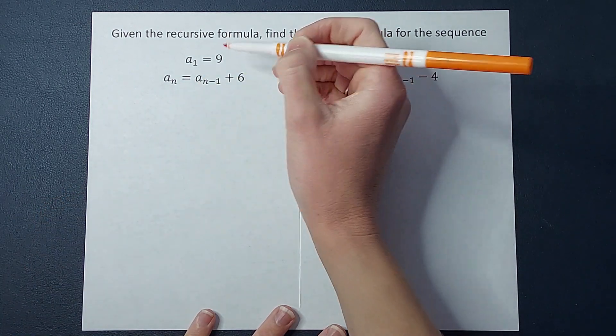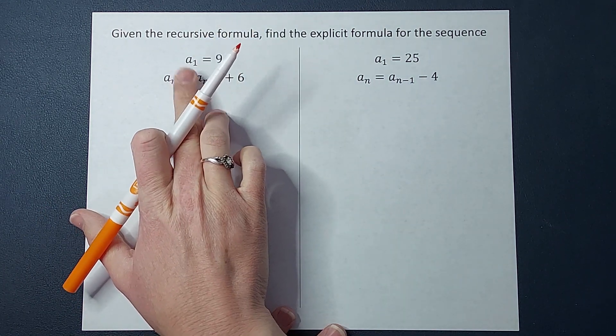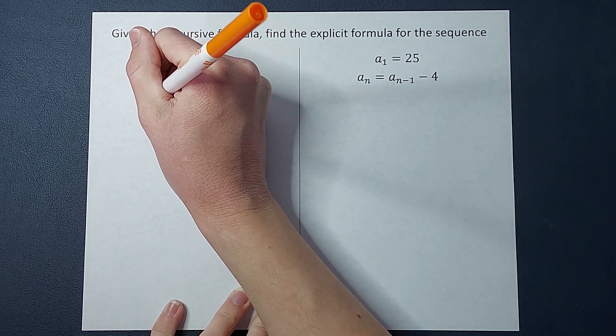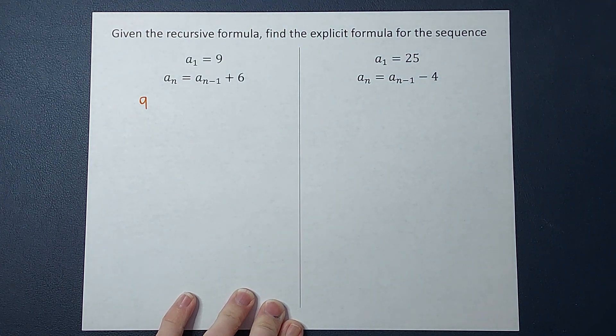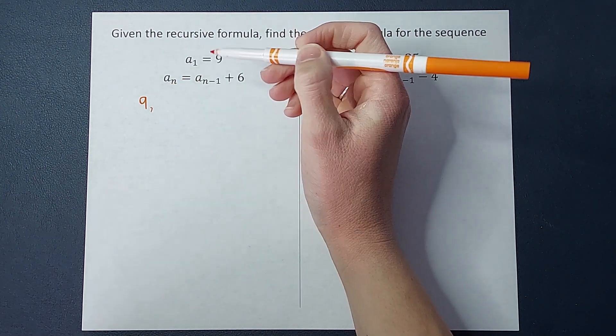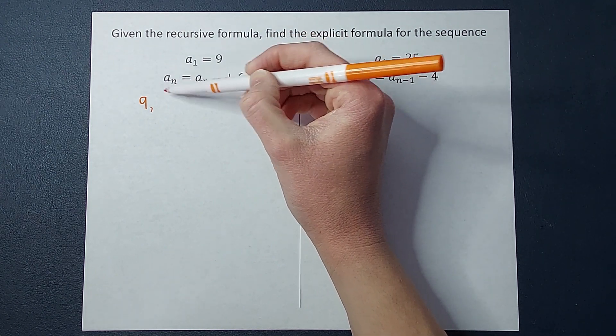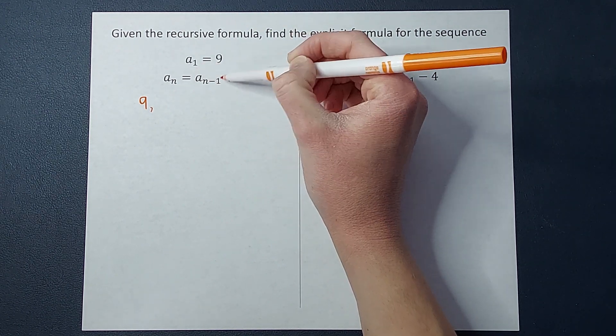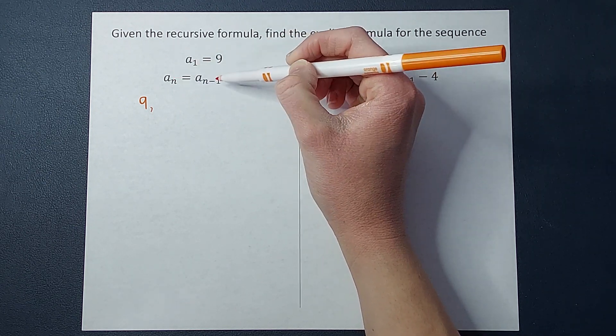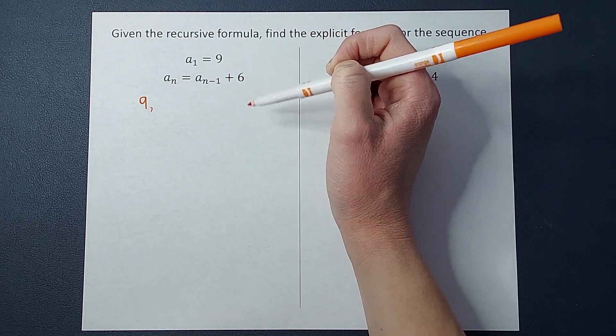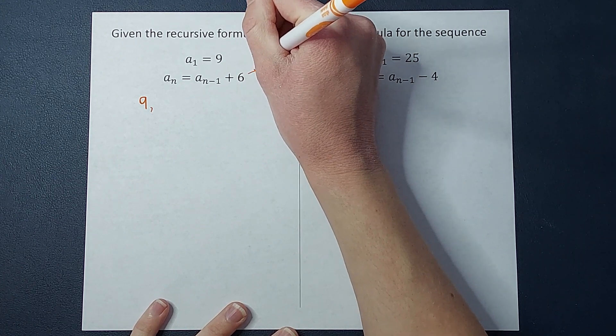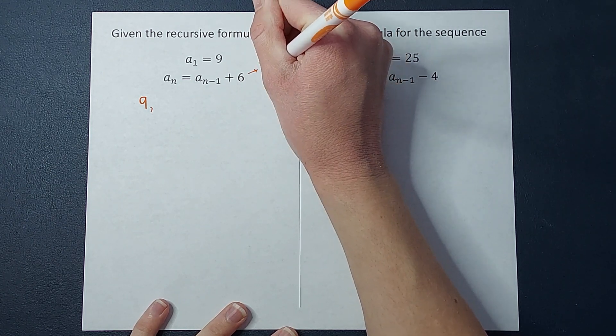Okay so we are just told straight up a sub one or the first number in my sequence is nine. So I already have one of the numbers in my sequence. But how do I find the next one? Well that is what the recursive formula is for. The recursive formula tells me whatever number you want to find a sub n, take the number before it. So if I want to know the fifth term I would need to know the fourth term and then add six to it. So what this formula is telling me is take the number before and add six.